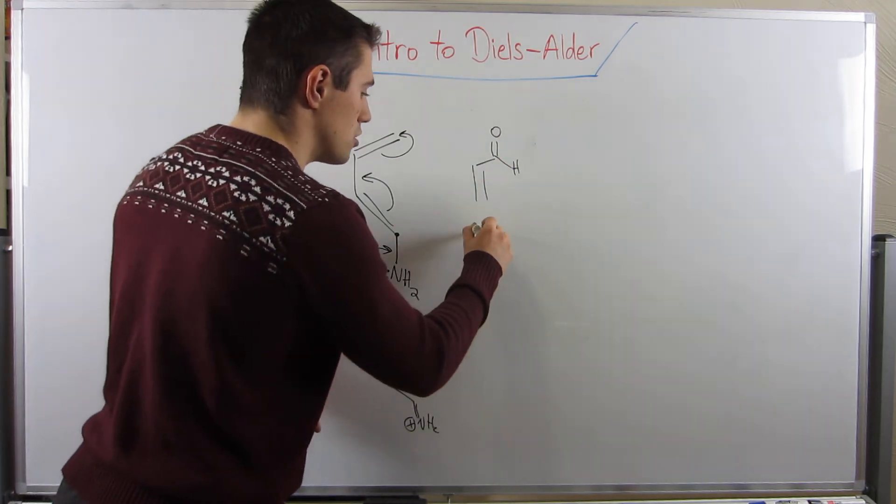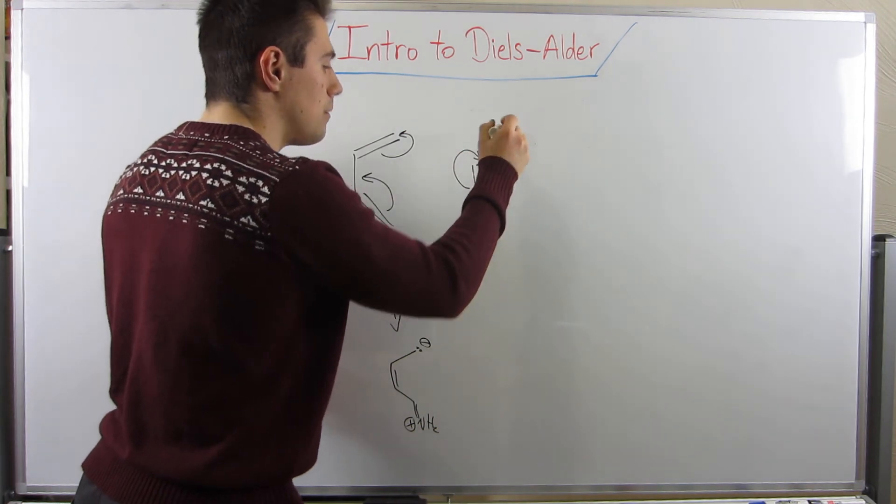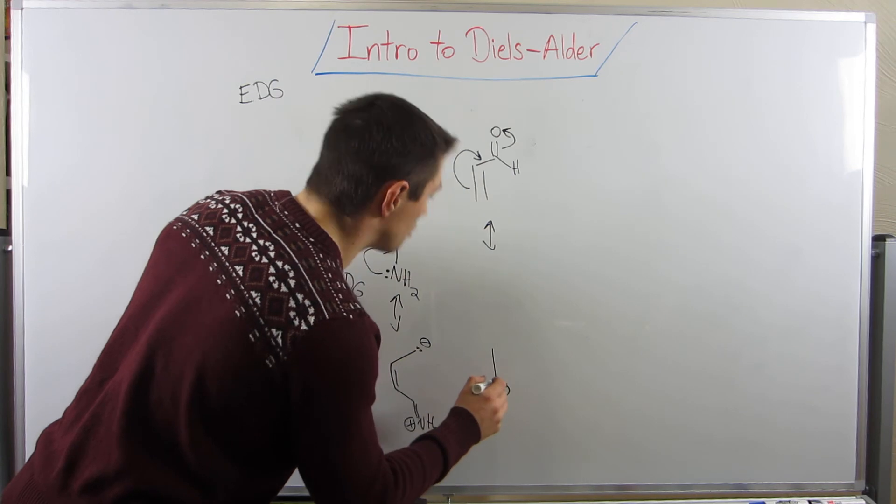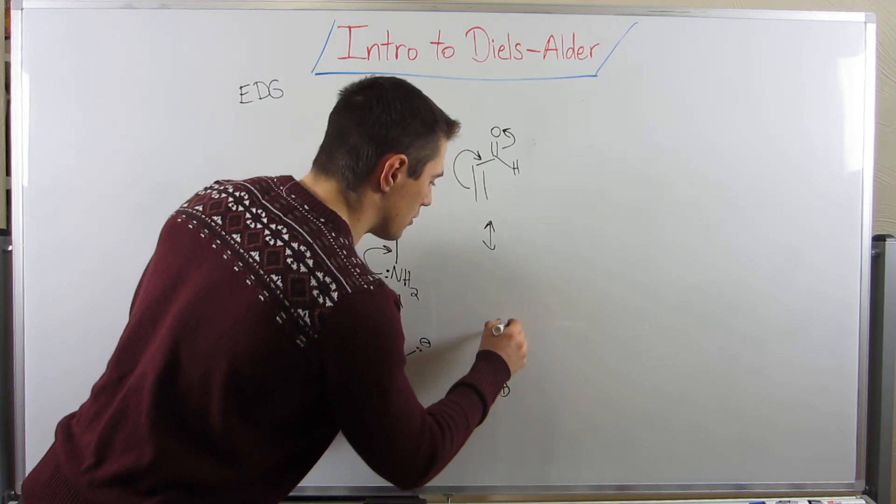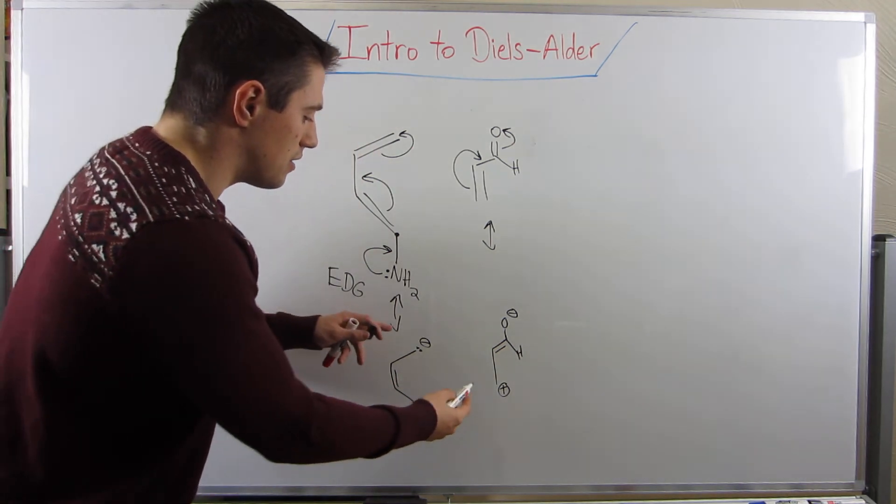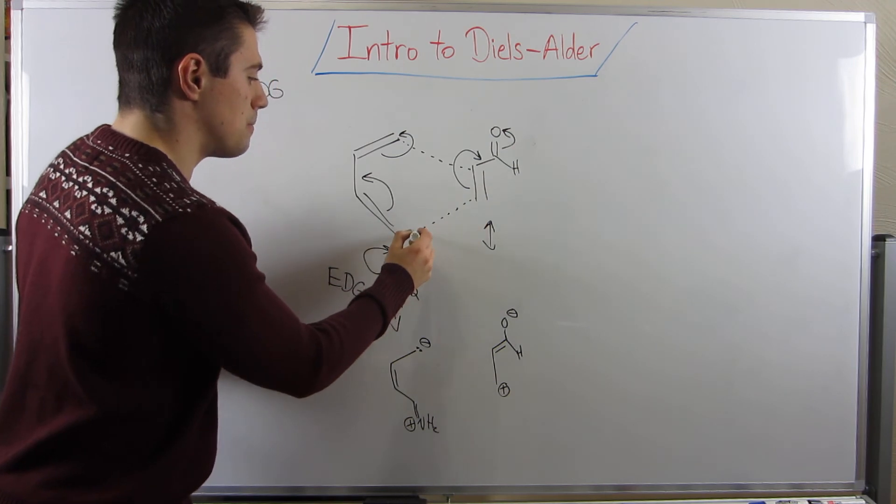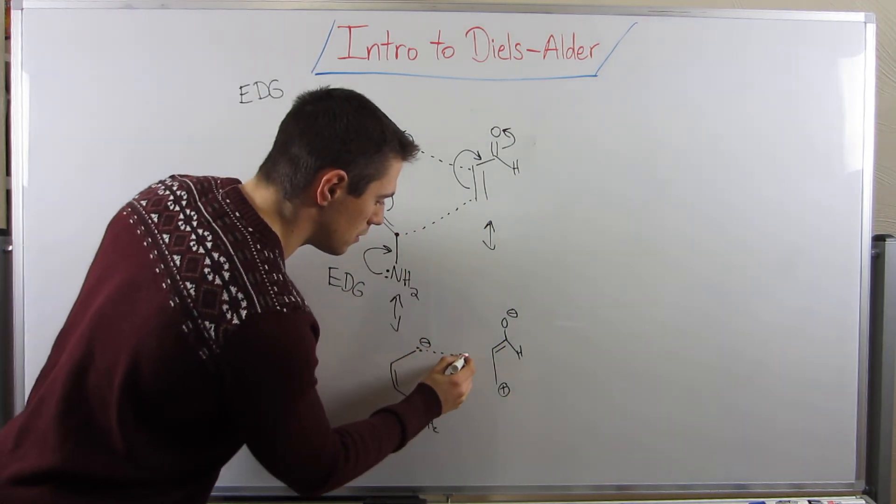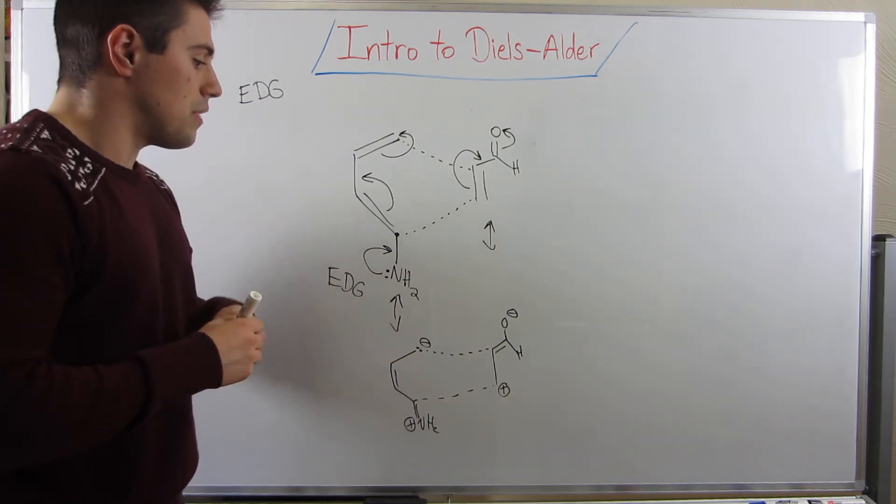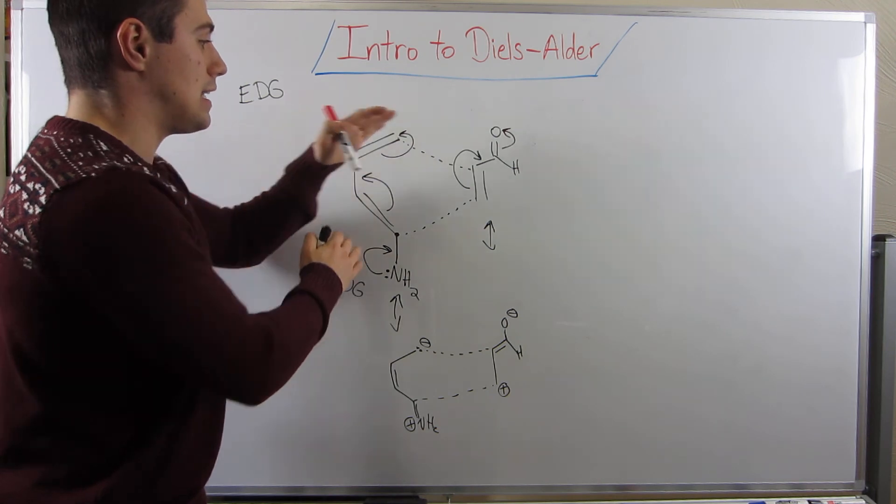Well, we just drew the resonance from this structure over here, right? We'd swing electrons over here, and these would kick up. So I would have a positive charge at the bottom, and then I would have the resultant over here. So you can see now that these charges do not match up, right? Because we know our ring is going to form like this. However, these charges do not match up.